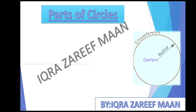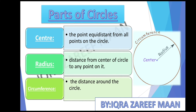Here we discuss some parts of the circle. First, the center — the point equidistant from all the points of the circle. Next is the radius — the distance from the center of the circle to any point on it. That fixed point is called the center and the fixed distance is called the radius. Next, circumference — the distance around the circle is called the circumference.